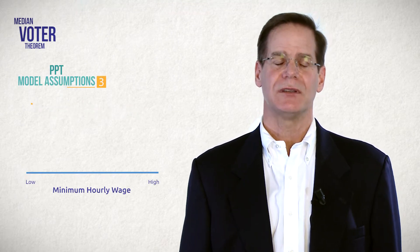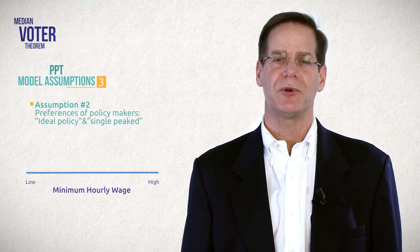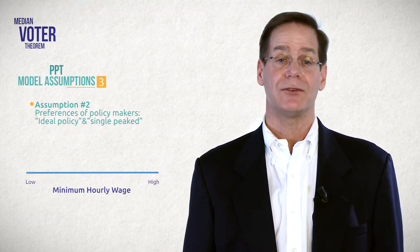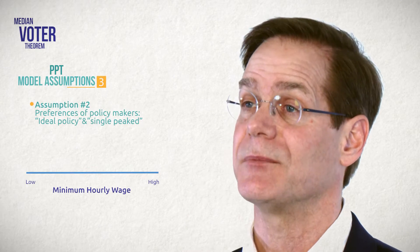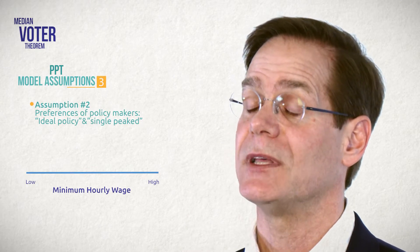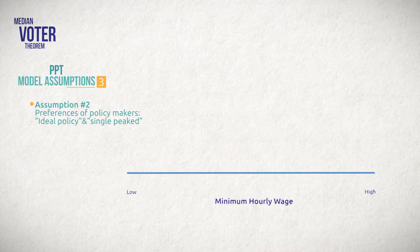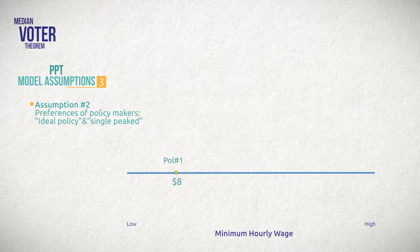The second assumption addresses the preferences of the people making policy. These people are elected officials, regulators, judges, even citizens in some cases. We're going to assume that the policymakers have an ideal policy which they prefer over all others. For example, policymaker number one would most prefer to see a mandated minimum wage of eight dollars per hour, while policymaker number two has an ideal minimum wage of nine dollars. Generally, policymakers' ideal policies differ from each other.